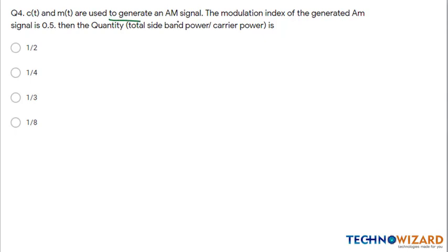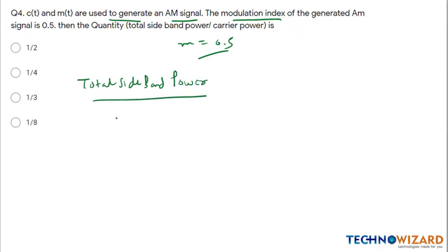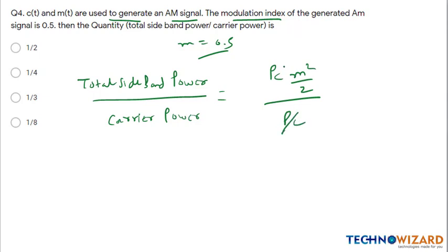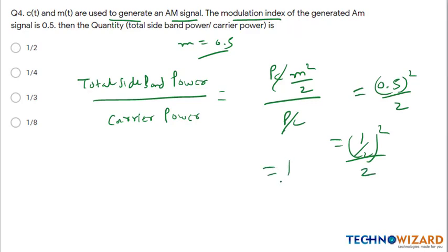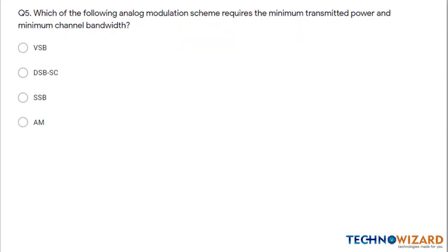Question 4: For an AM signal with modulation index m = 0.5, find the ratio of total sideband power to carrier power. Total sideband power = PC × m²/2. Dividing by PC cancels out, leaving m²/2 = (0.5)² / 2 = (1/2)² / 2 = (1/4) / 2 = 1/8. Option D is the correct answer.